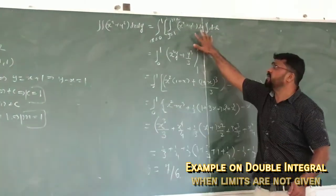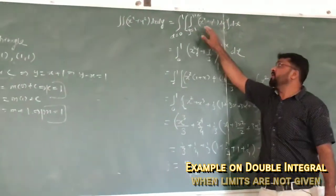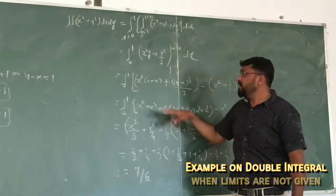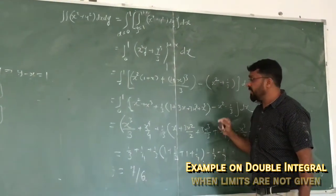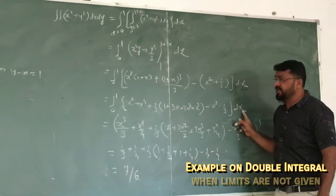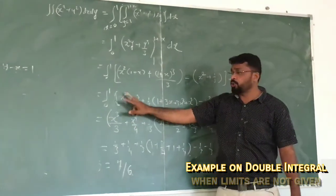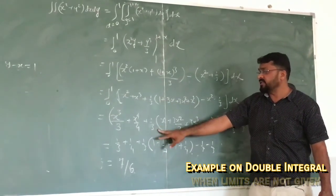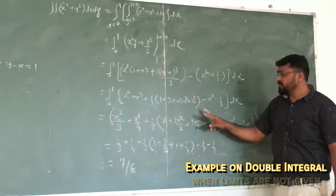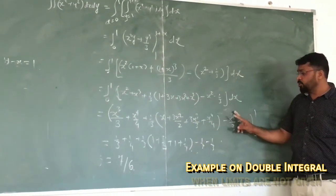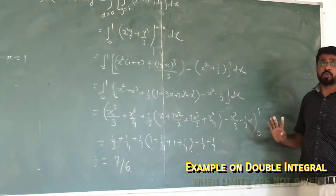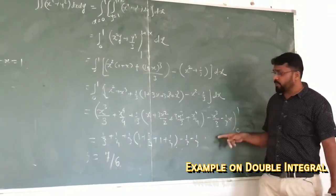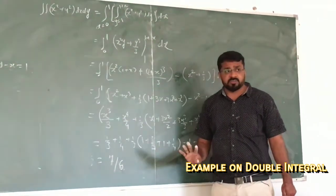Now we do the first integration with respect to y, treating x as constant. We integrate x squared y plus y cubed by 3, then apply the upper limit minus lower limit. After simplifying and then integrating with respect to x using terms x squared by 2, x cubed by 3, x to the power 4 by 4, and applying limits 0 to 1, the answer is 7 by 6.